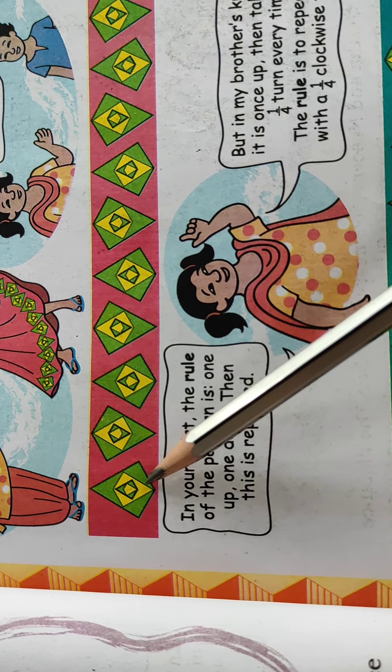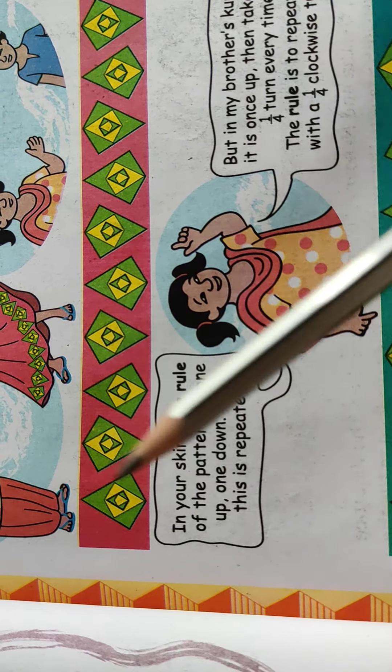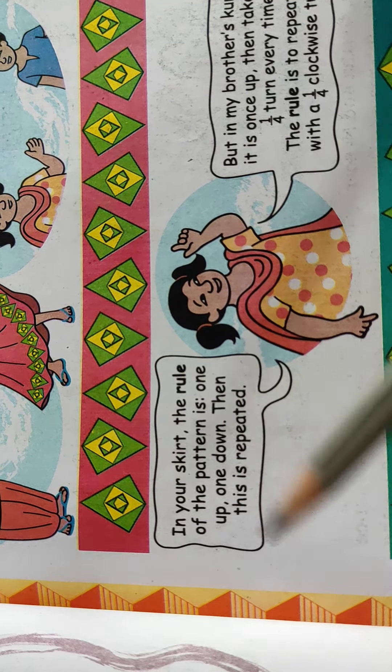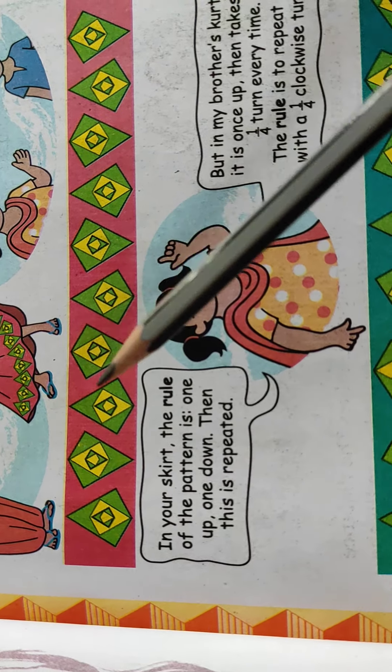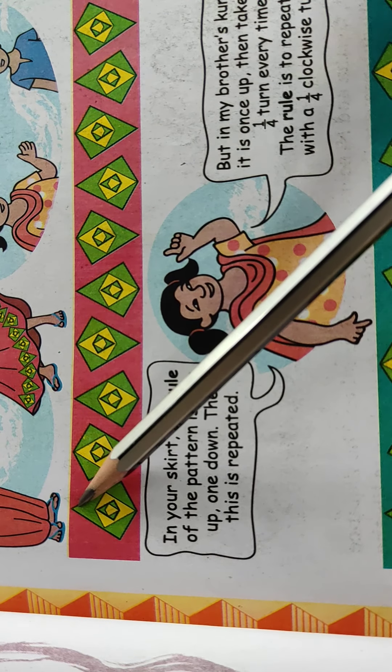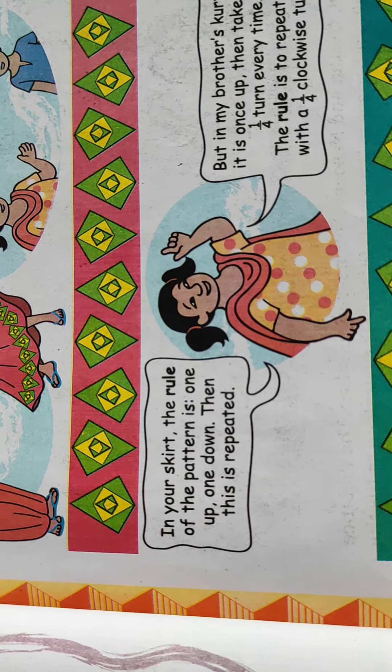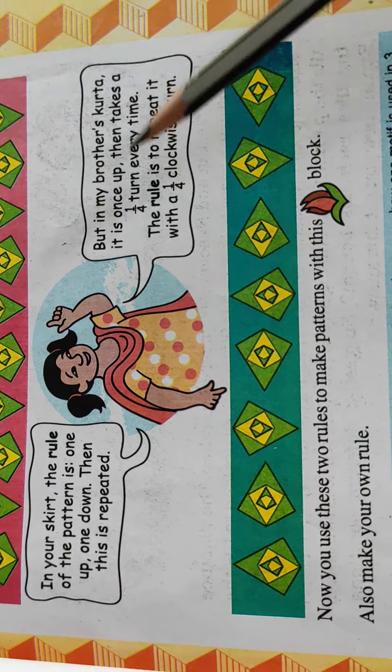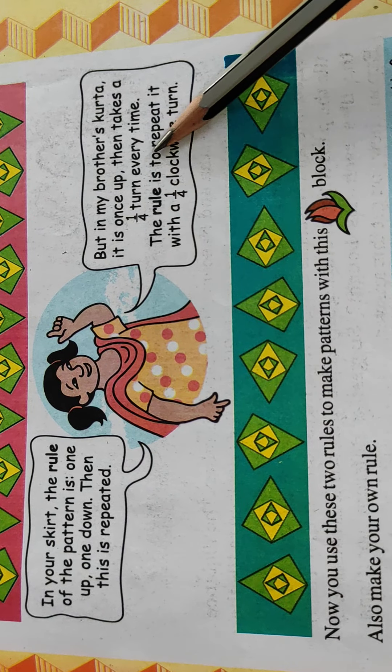That means क्या rule है यहाँ पर? एक बार यह quadrilateral, one up, one down. That means upwards downwards, upwards, down. ऊपर की ओर यह वाला vertex है फिर एक बार नीचे की ओर है फिर ऊपर की ओर नीचे की ओर है फिर ऊपर की ओर नीचे की ओर. Then it takes a one-fourth turn every time.